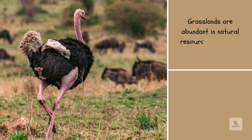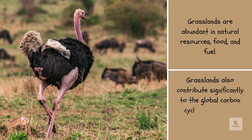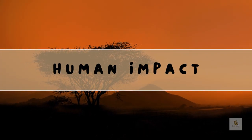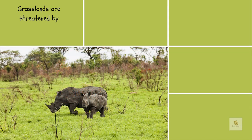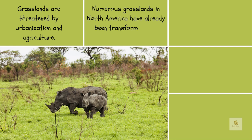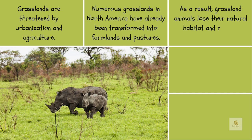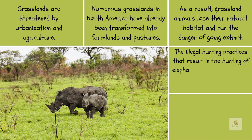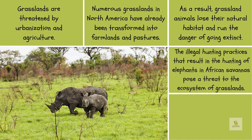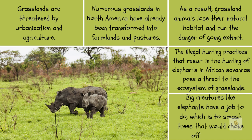Grasslands are abundant in natural resources, food, and fuel. Grasslands also contribute significantly to the global carbon cycle and support biodiversity on a big scale. Grasslands are threatened by urbanization and agriculture. Numerous grasslands in North America have already been transformed into farmlands and pastures. As a result, grassland animals lose their natural habitat and run the danger of going extinct. The illegal hunting of elephants in African savannas poses a threat to the ecosystem of grasslands, as big creatures like elephants play a role in smashing trees that would choke off the grass.